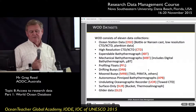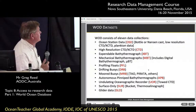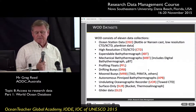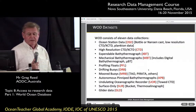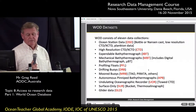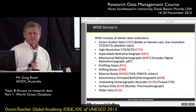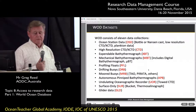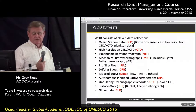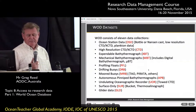The WOD consists of 11 different data collections. First, ocean station data — usually low resolution measurements or plankton data. There's also high resolution CTD data, which collects temperature and salinity. Expendable bathythermograph collects temperature data. Mechanical bathythermograph is an older instrument no longer used. There are profiling floats such as Argo floats, drifting buoys, moored buoys, and autonomous pinniped bathythermographs.